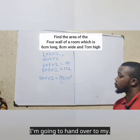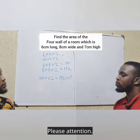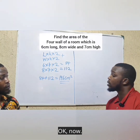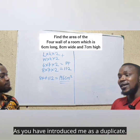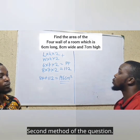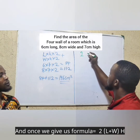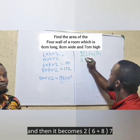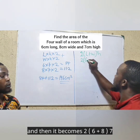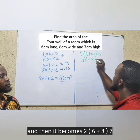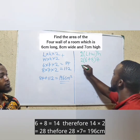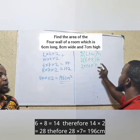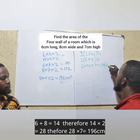Now let's go to the second method. The second method gives us two bracket length plus width bracket times height. Two bracket: length is six, plus width is eight, times height is seven. Six plus eight gives you 14, so two times 14 times seven. Two times 14 gives you 28, and 28 times seven gives you 196 centimeters squared.